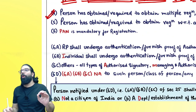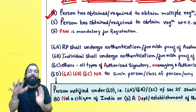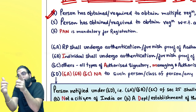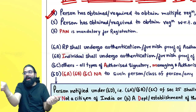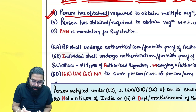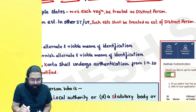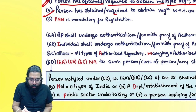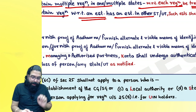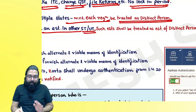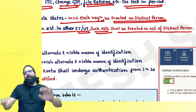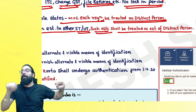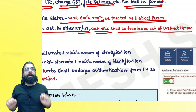Section 25(4): distinct persons — if in one state I have two separate registrations, both are distinct persons for each other. Supply from one registration to another is a supply between distinct persons under section 7(1)(c). A person with multiple registrations in one state, or registered in one state but with an establishment in another state — each establishment is treated as a distinct person, even if the other state establishment is not registered.